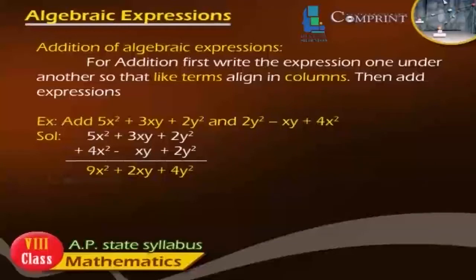Example: Add 5x² plus 3xy plus 2y² and 2y² minus xy plus 4x². Solution: 5x² plus 3xy plus 2y² plus 4x² minus xy plus 2y² equals 9x² plus 2xy plus 4y².